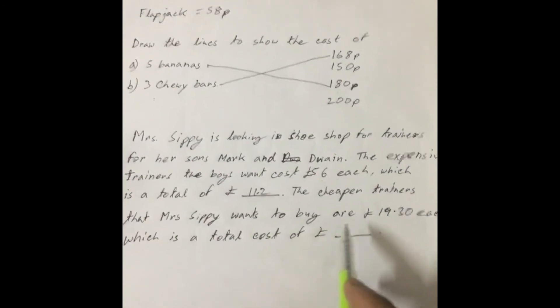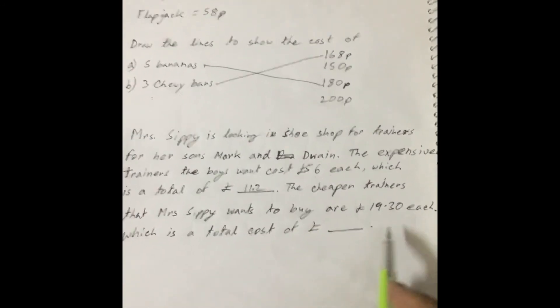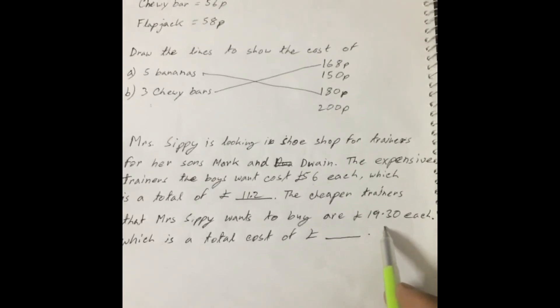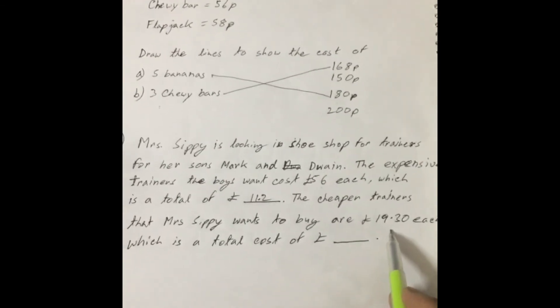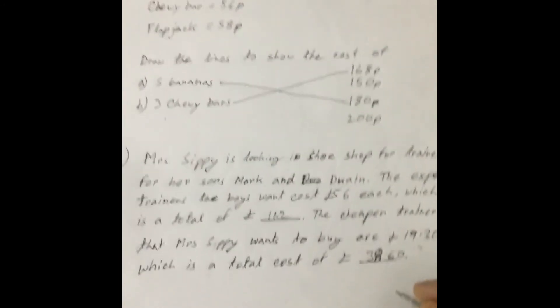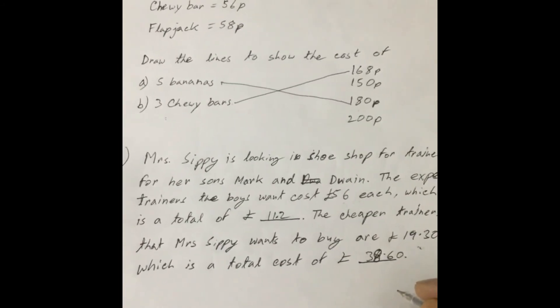The others are 19.30 each. Again, if each trainer costs 19.30 and she needs 2 for her 2 sons, the total will be 38.60, or 38 pounds 60 pence.